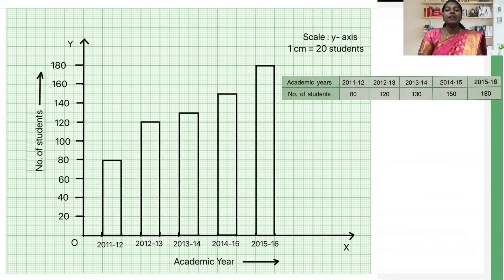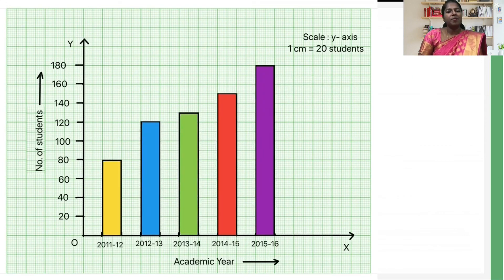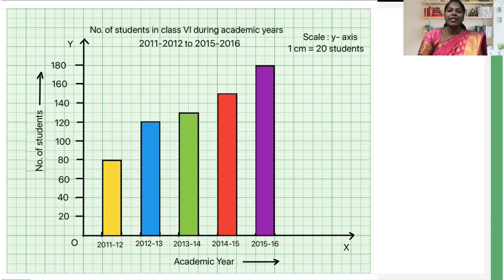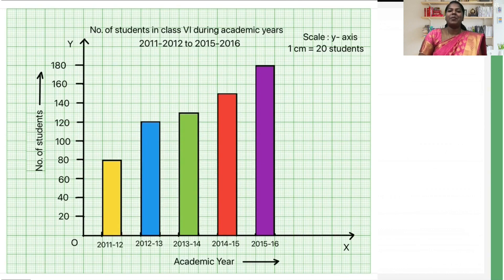Bars are drawn for all the information given in the table. If you want, you can shade or color the bars. Finally, let's give a suitable title for this bar graph: 'Number of students in class 6 during academic years 2011-2012 to 2015-2016.' This represents the bar graph of the given data. Thanks for watching, and happy learning!